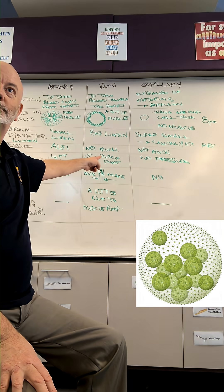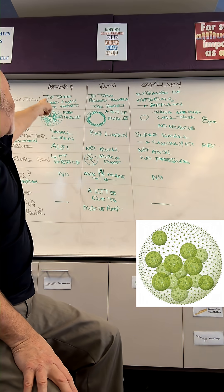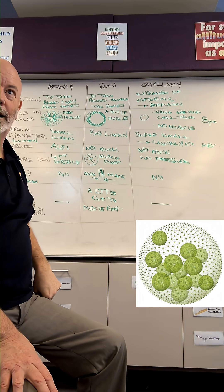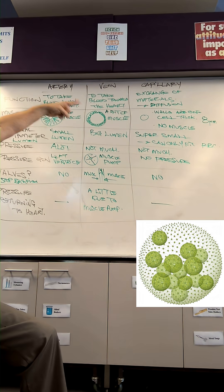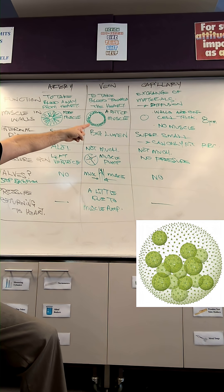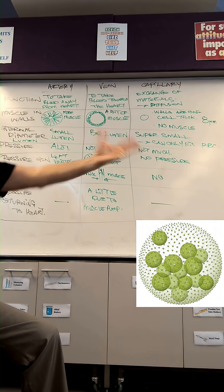Blood vessels. We're going to compare arteries, veins, and capillaries. The function of an artery is to take blood away from the heart. The function of a vein is to take blood back to the heart. And the function of the capillary is the exchange of materials.